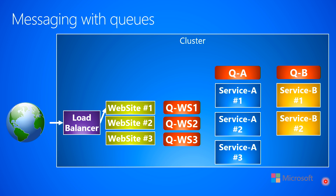Website number one is processing this client request that came in, and it needs to go and talk to service A, one of the instances of service A. Now, from what I've shown you in the past, it would do a network communication and might have to use the DNS and go through a reverse proxy in order to find service A. But in this example, I've created a queue service for service A instead. I'm now going to have website one queue a message up into the queue service, and that message is basically saying: service A, I need you to do some processing for me. Once that message has been queued up into the queue service, that arrow goes back because we've completed the queuing of that request.